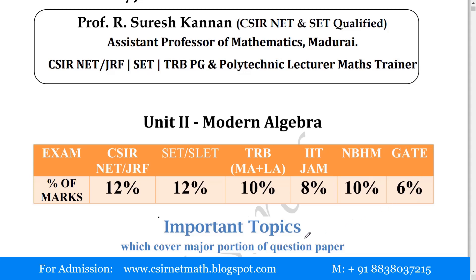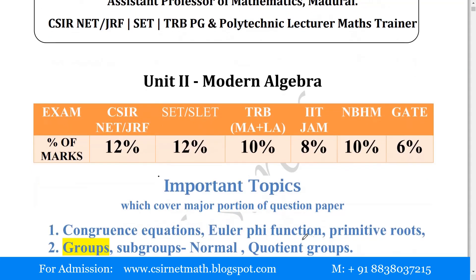The important topics covering a major portion of questions from modern algebra are: number one, congruence equations — solving congruence equations; then Euler phi function and primitive roots. Second is group theory, from which we can also expect a good number of questions.